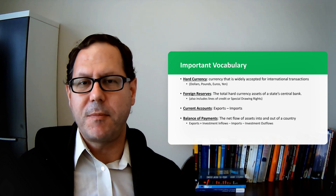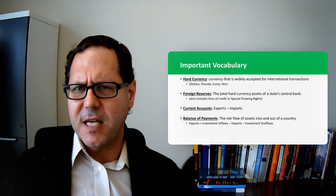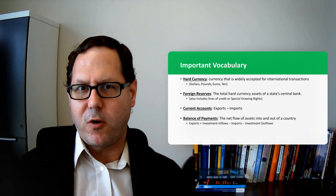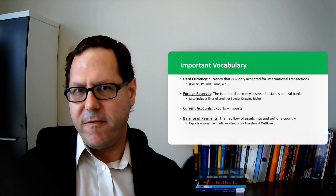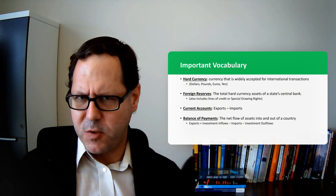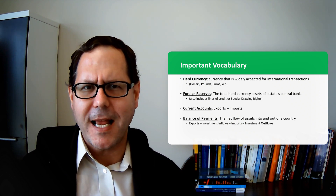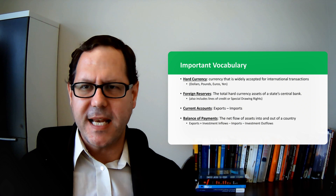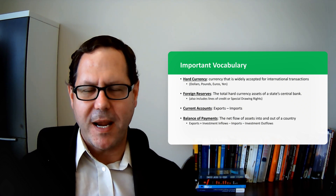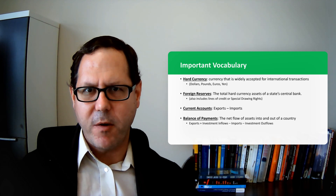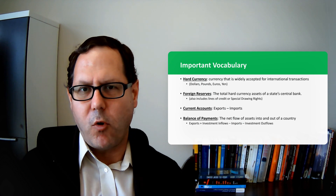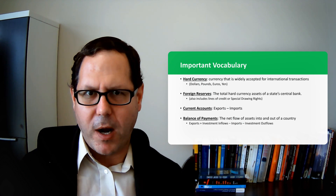Hard currencies are widely accepted for international transactions, and oftentimes countries will keep these currencies in reserve as part of what we call foreign reserves — the amount of currency and other assets like gold and special drawing rights held by a state's central bank. The institution responsible for managing currency and monetary policy holds these foreign reserves, which are used to help support and maintain the currency as well as a variety of other things.